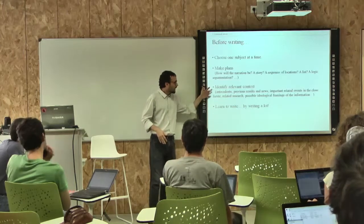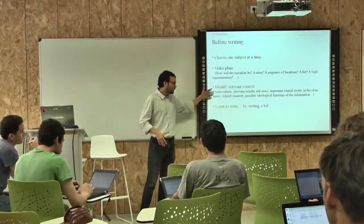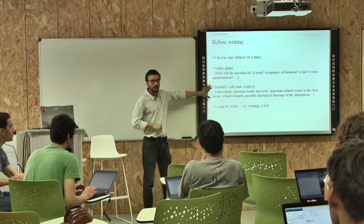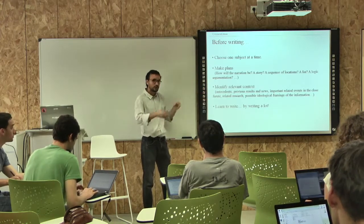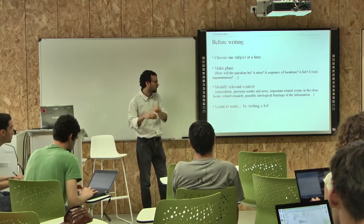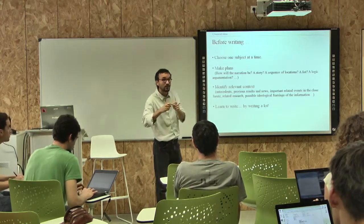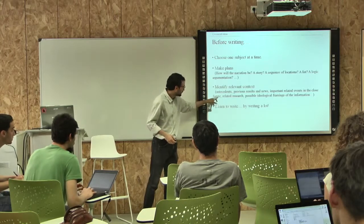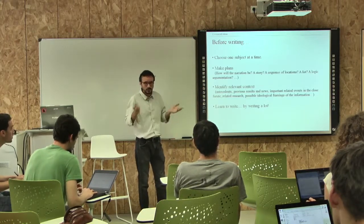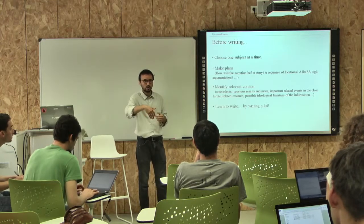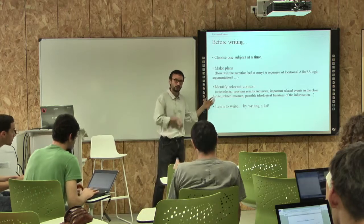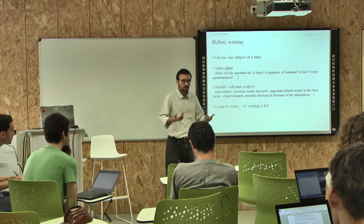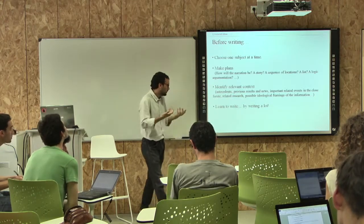Always before writing, it is very important to identify the relevant context. What are the things I have to bring in to explain this subject? What are the antecedents? What is the string of facts leading to this? What are events related to it in the near future? For example, if you're talking about climate change and there's a meeting on it in one month, it's very important to bring this into the article. What is the related research, and what is the possible ideological or political framing of the issue?